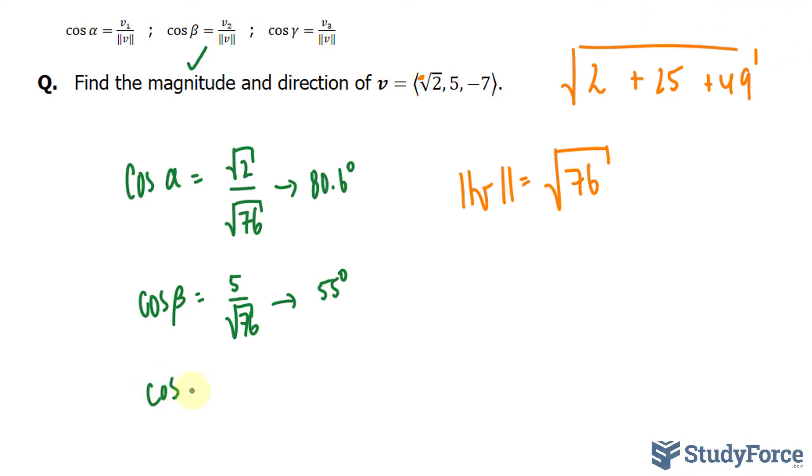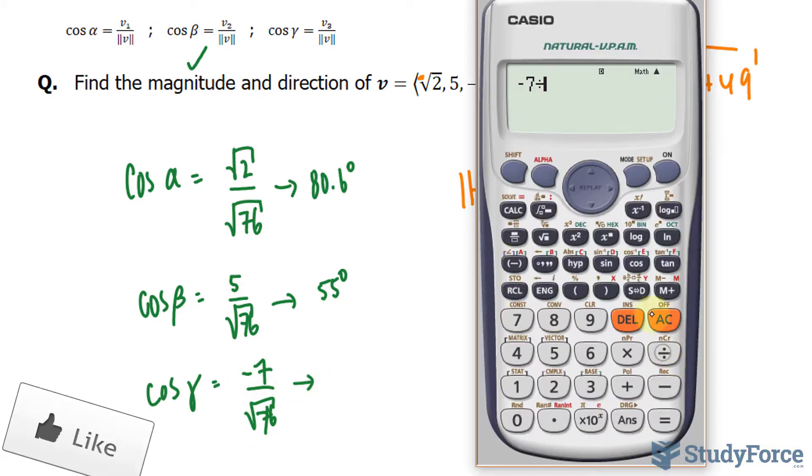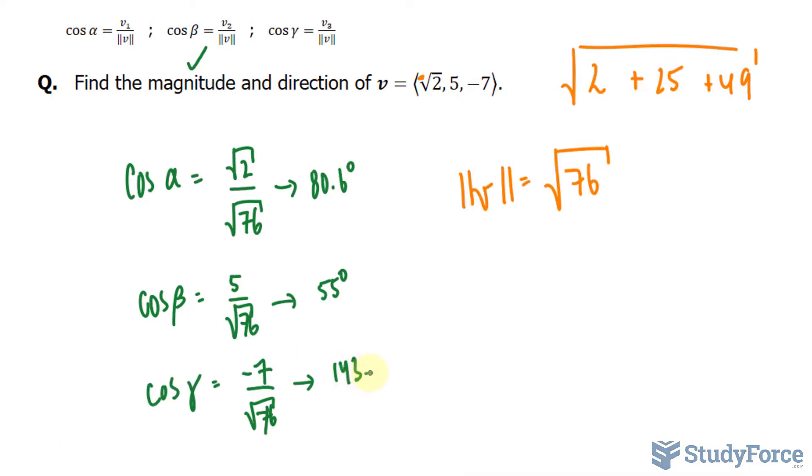And finally, cosine gamma is equal to negative 7 over the square root of 76. Negative 7 divided by the square root of 76 gives us, and taking the cosine inverse of that is equal to 143 degrees.